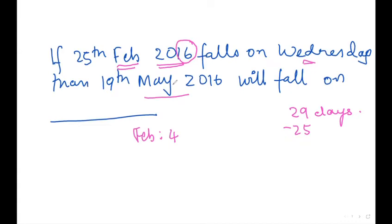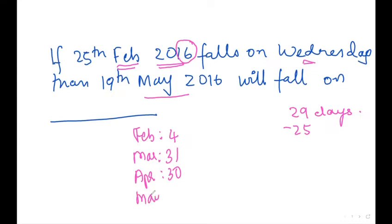Since 25th February falls on Wednesday, we need to find which day 19th May 2016 falls on. From 26th February till 19th May, we take the whole of March — 31 days — the whole of April — 30 days — and for May we only take 19 days, because we need to find 19th May. Now add these up.